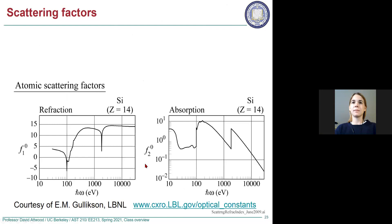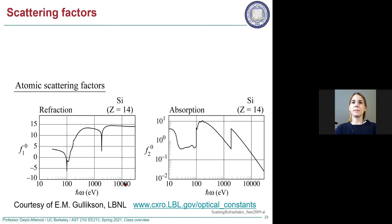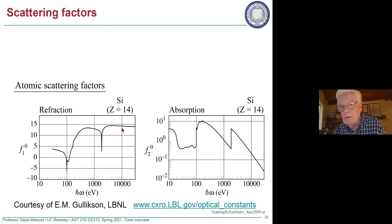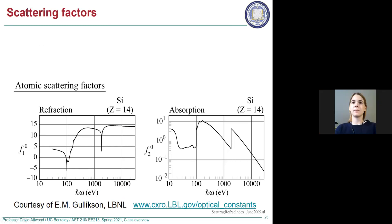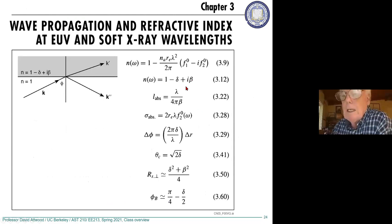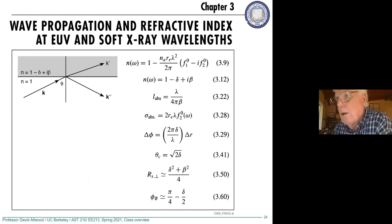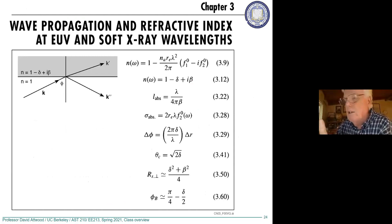Student question: those graphs showed incident photon energy versus how likely the atom is to scatter? Answer: yes — for a single silicon atom, one curve shows the contribution to refraction (the phase velocity change) and the other shows the absorption for that collection of electrons.